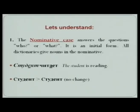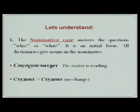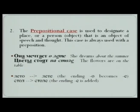Let's understand these cases with a few examples. The nominative case answers the questions who or what. It is the initial form — all dictionaries give nouns in the nominative form only. For example, stujint chittayit means the student is reading. It is in its initial form, talking about who or what. Stujint remains stujint here — there is no change, as you can see on the screen.